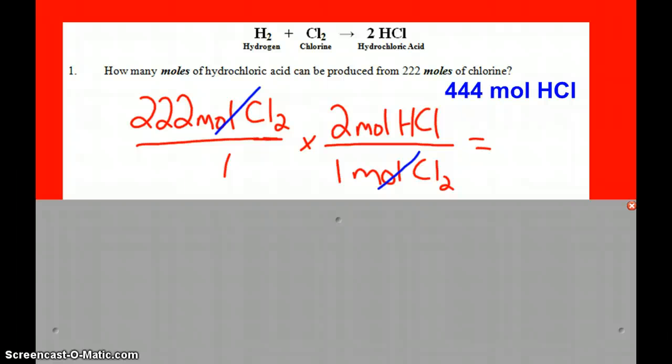For the second reaction, again, the first question is a mole-mole problem, so you're just using the mole ratio, changing from chlorine to hydrochloric acid using the 2 to 1 mole ratio.